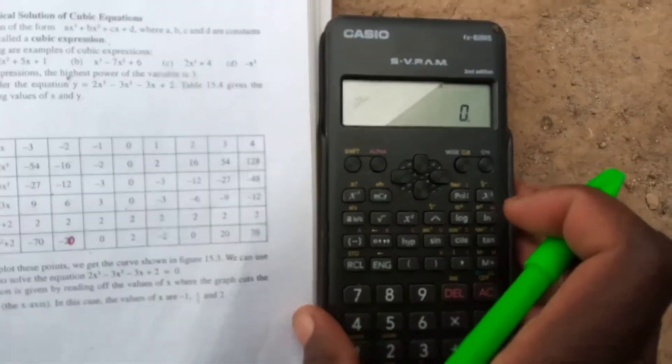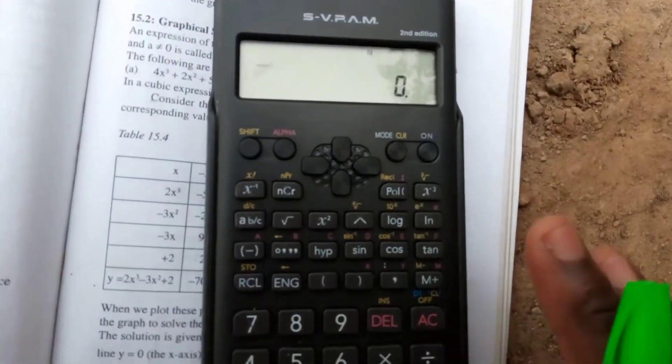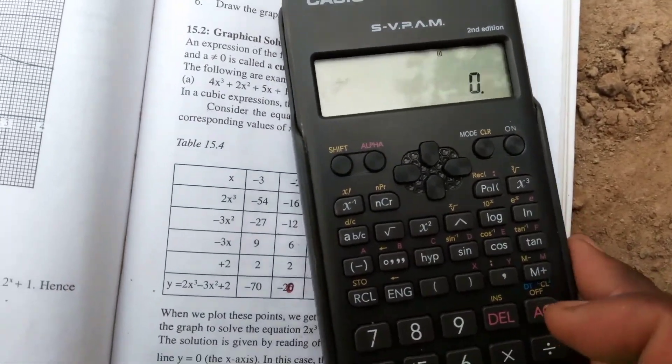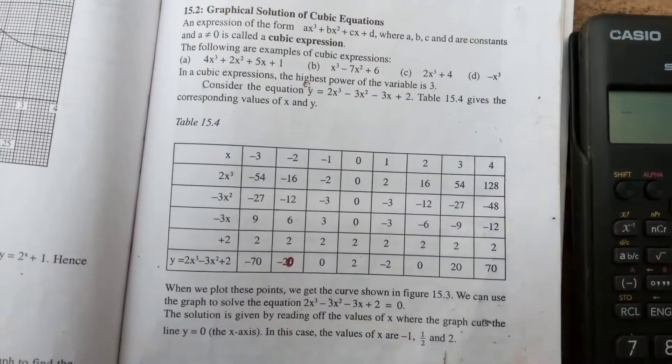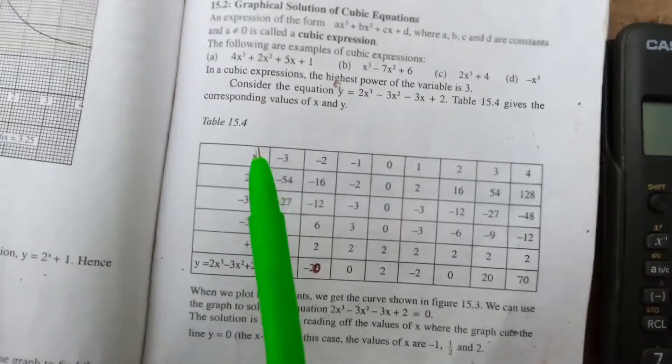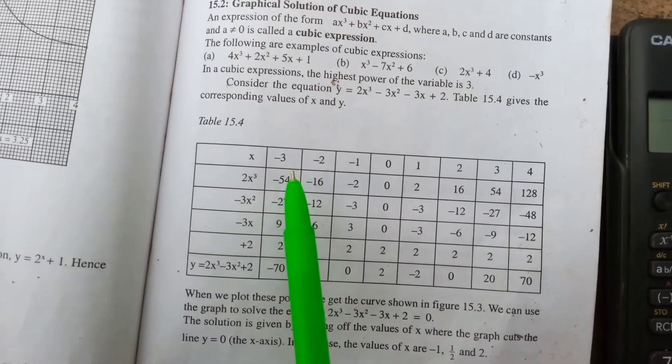First of all you have to turn on your calculator. So it is on. Next step you have to look at the corresponding values of x. The first value of x is negative 3.